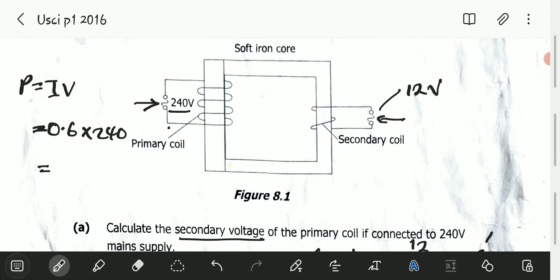The primary power, power in the primary coil, is 144 watts.